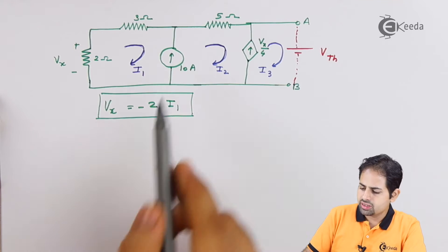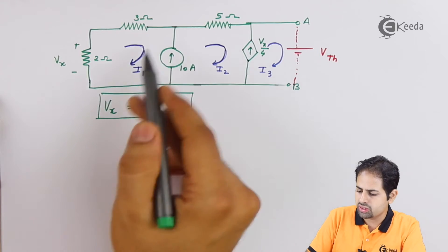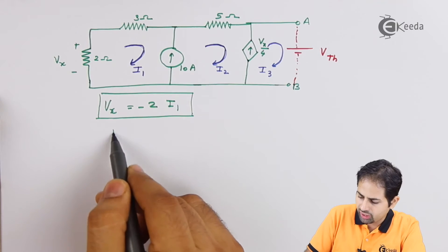Next, see this 10 ampere source is going above, I2 is going above, I1 is coming down. So this is the condition of super mesh. So we can write.